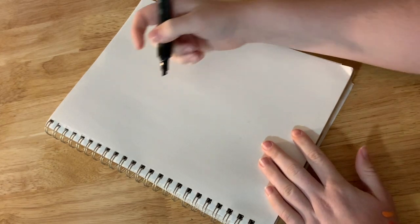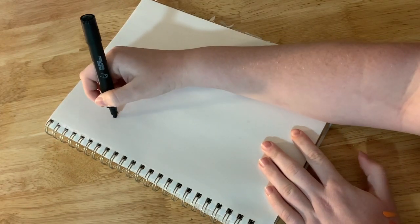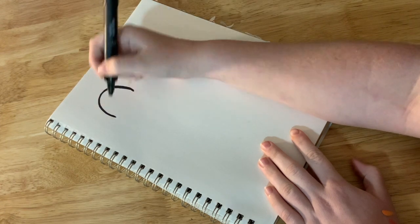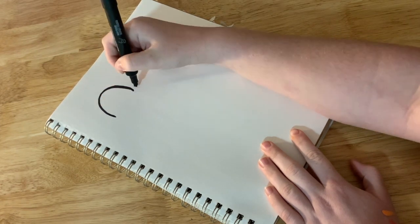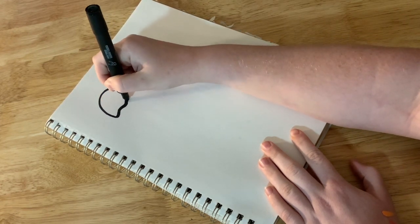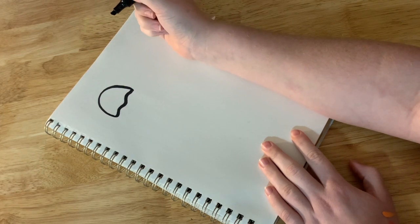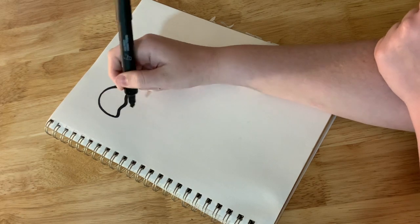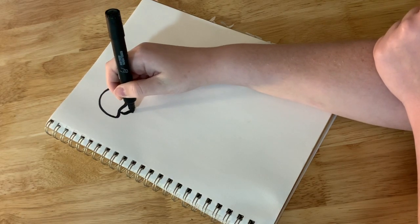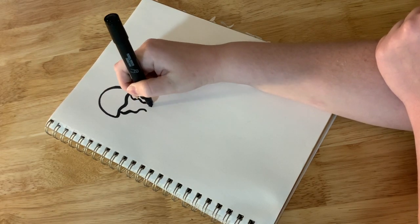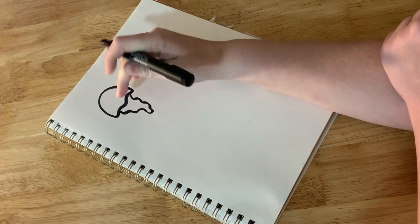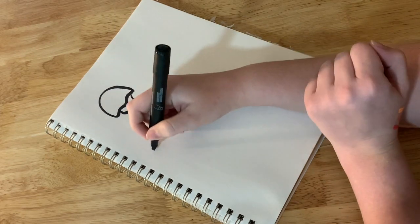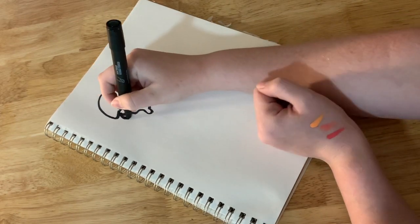So to draw a jellyfish I'm gonna first draw an upside-down U like that. Then I'm gonna connect it. You could either do a straight line across or you do a slightly wiggly line across like that. Then we need to give our jellyfish its tentacles. So I'm gonna first give it a big chunk of its tentacles right here and then it has those long flowing tentacles as well.